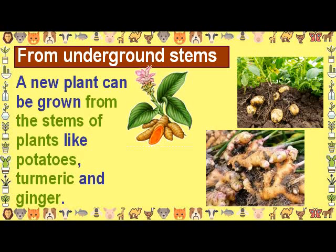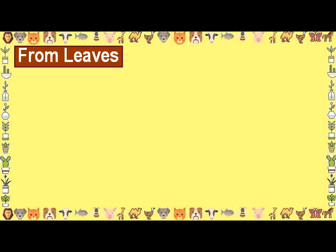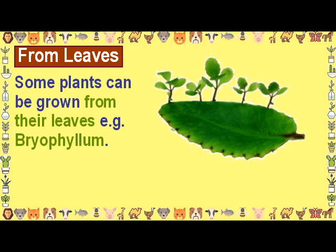From underground stems: a new plant can be grown from the stems of plants like potatoes, turmeric and ginger. From leaves: some plants can be grown from their leaves. An example is bryophyllum.